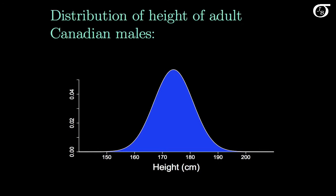A little loosely speaking, values of the variable where the curve is high are more likely to occur than where it is low. So here we would be more likely to get a height in this range than way out here in this extreme.